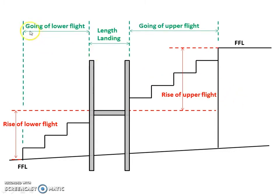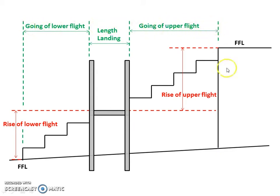We've also got going of lower flight and going of upper flight. In between the two is the length of our landing. All three of those added together will equal the total going. So it's important to know what the length of the landing is — usually that just comes straight off the plan; it should be marked on there.